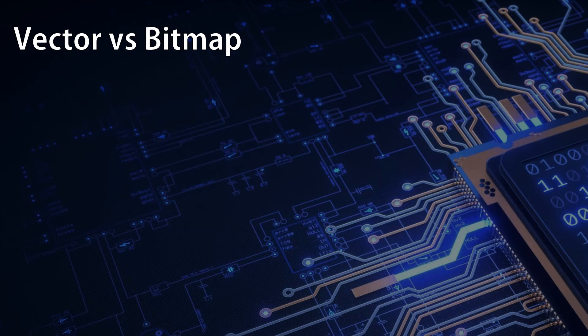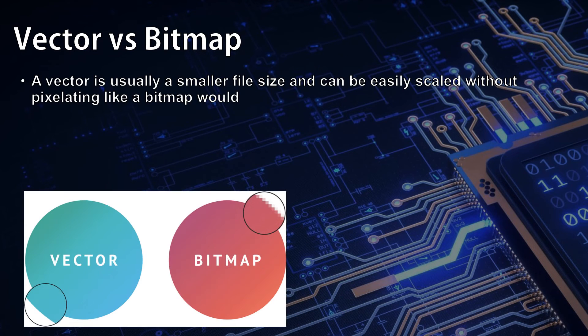A vector image is usually a smaller file size, because it's just a list of commands on how to draw the image. Vectors can also easily be scaled without pixelating like a bitmap would, as you can see in this example image.